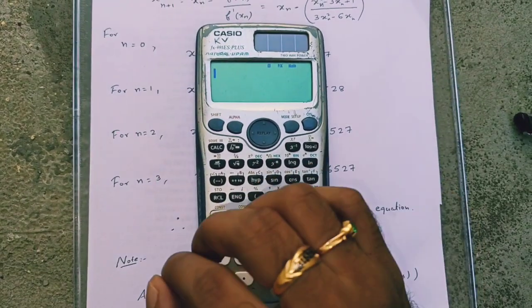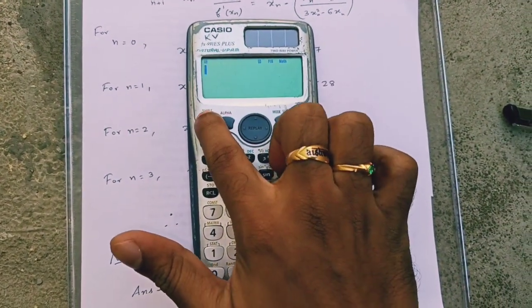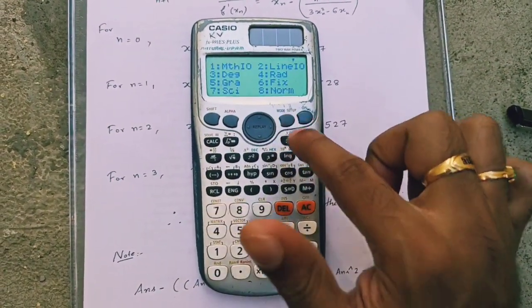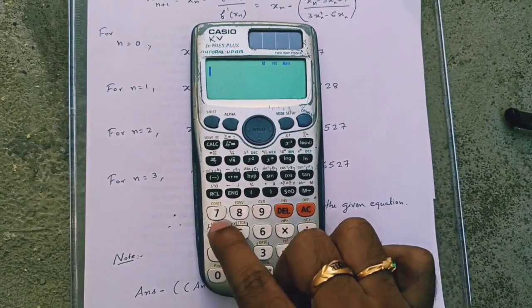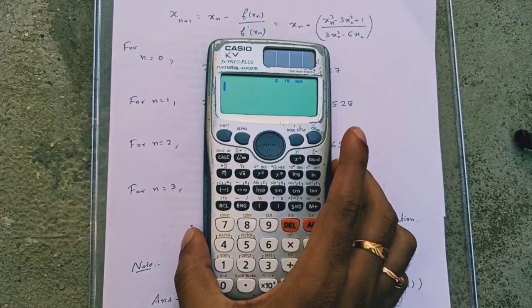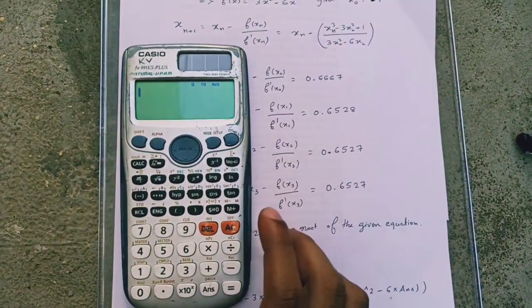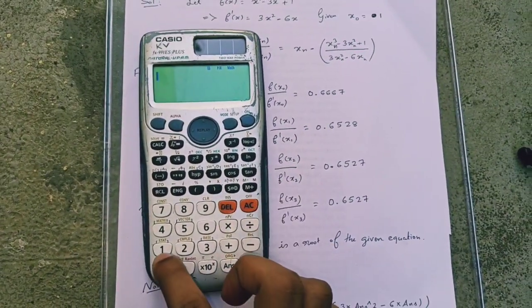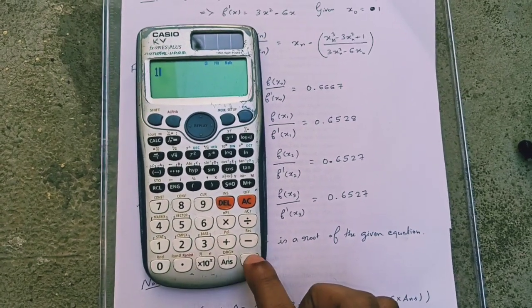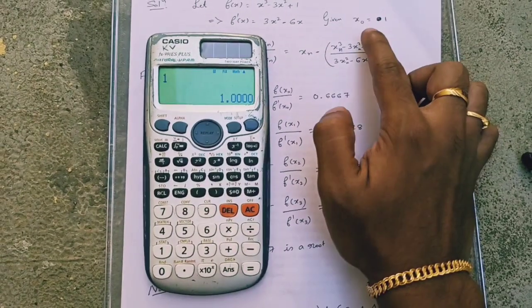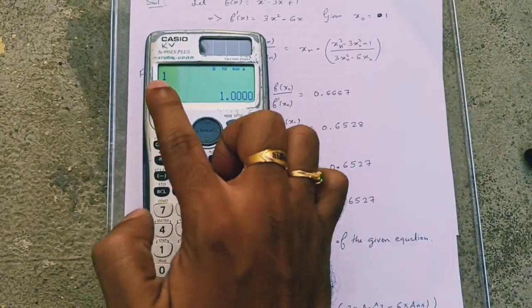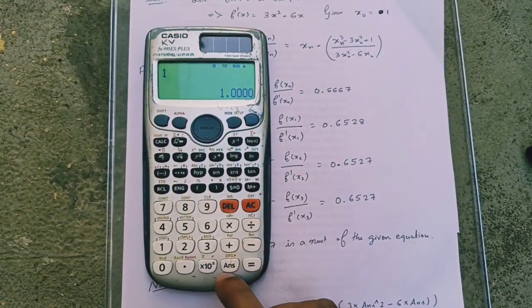Now, in the calculator, I fix the number of decimal digits to 4. Next, you need to type this formula. So first type the initial value and press equals. Now, the value of x naught that is 1 is stored in answer.